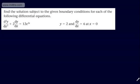What we've got here is to find the solution subject to the given boundary conditions for each of the following differential equations. We've got d²y/dx² + 2dy/dx = 12e^(2x).